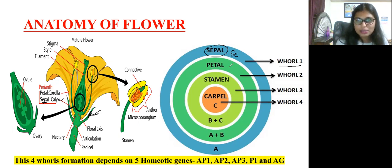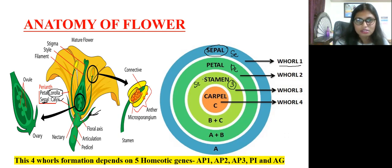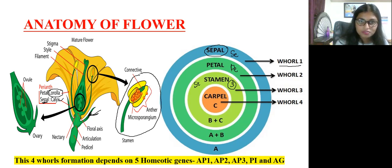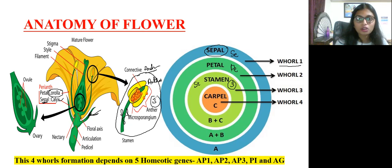The second whorl is the petal — the colorful yellow, red, or white structure, also called corolla. The third whorl is the stamen, also called androecium, which is the male reproductive organ in plants, consisting of anther and filament.